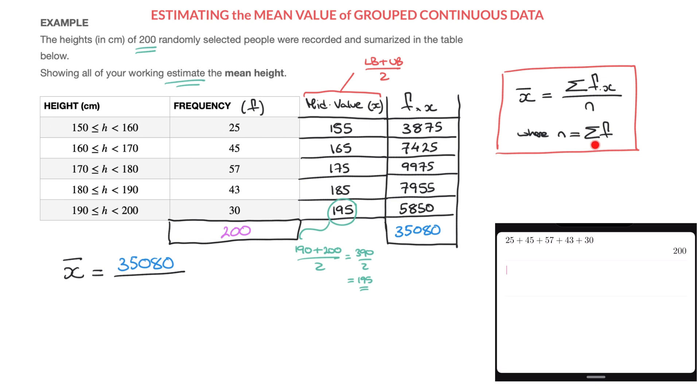And so n, the sum of all the frequencies, is 200. And so we write that on this denominator here.